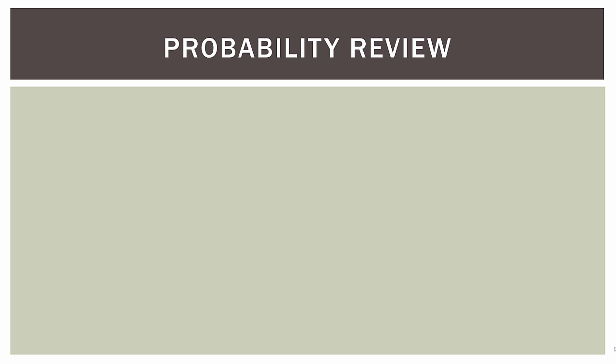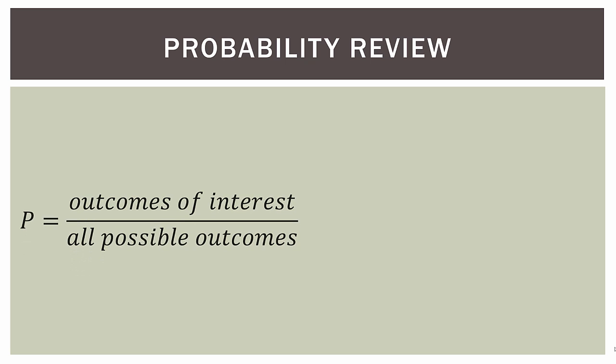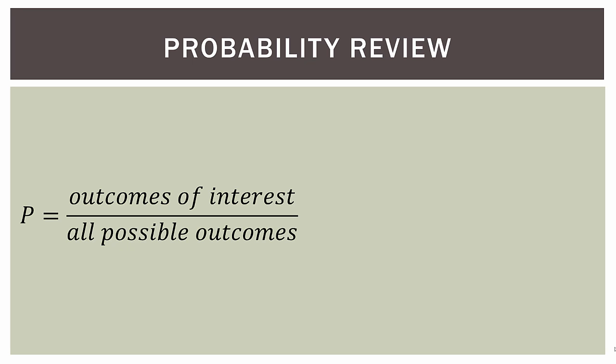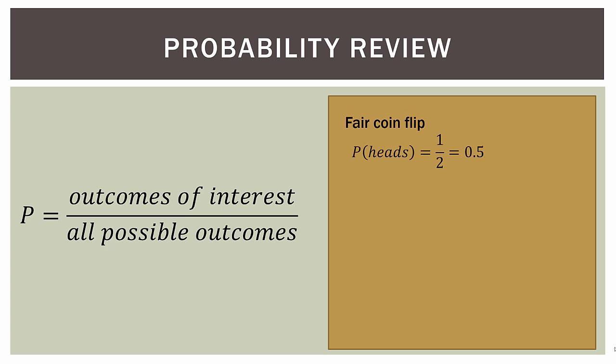The first thing we're going to do in this video is just a basic review of probability. Remember that probability is the outcomes of interest divided by the number of all possible outcomes. So let's say we flip a fair coin. The probability of heads is one over two — the outcome of interest is flipping heads out of two possibilities, heads or tails. The probability is 0.5.